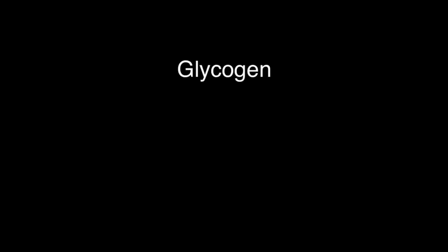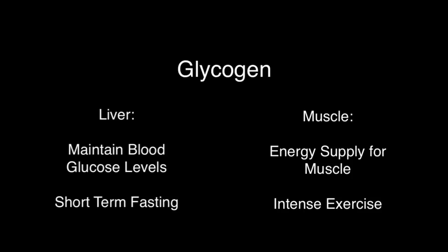Glycogen is your stored energy in primarily two tissues, in your liver and in your muscle. It's used as a short-term fix. In the liver, it's between breakfast and lunch, lunch and dinner. You mobilize your glycogen to release glucose for the rest of the body and maintain blood glucose levels.